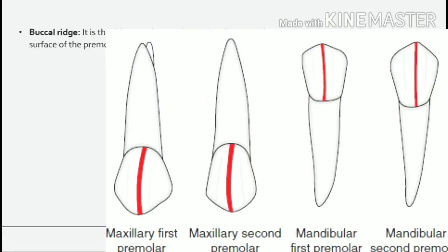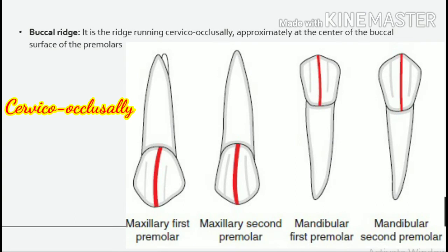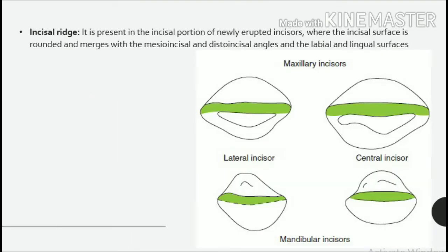Buccal ridge: it is the ridge running cervico-occlusally, approximately at the center of the buccal surface of the premolars. It extends from the cusp tip to the cervical region of the tooth, and is very prominent in the first premolar compared with the second premolars. Incisal ridge: it is present in the incisal portion of newly erupted incisors, where the incisal surface is rounded and merges with the mesioincisal and distoincisal angles and the labial and lingual surfaces.